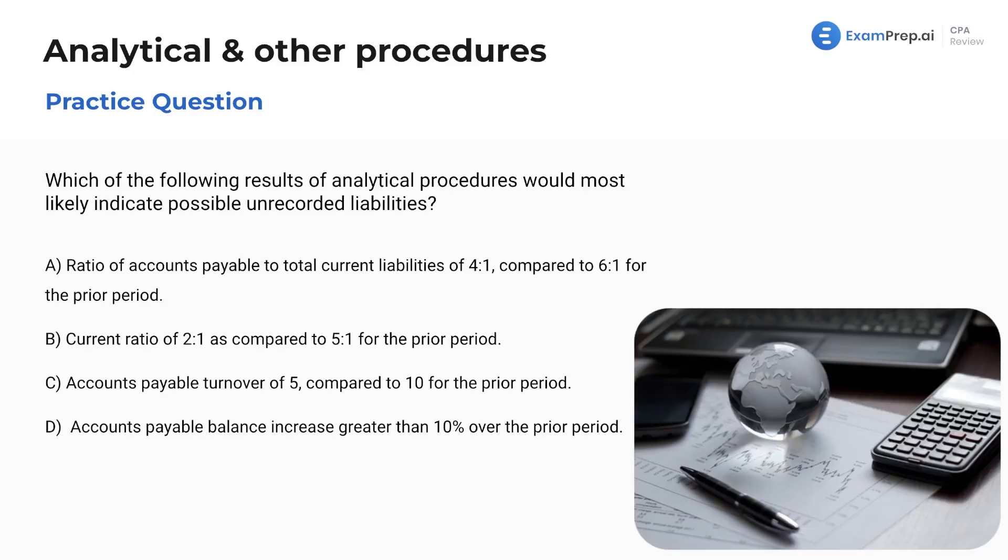Which of the following results of analytical procedures would most likely indicate possible unrecorded liabilities? I like this. We're applying our knowledge and saying, okay, let's be a little analytical here. Let's think about this for a second. Okay. Which would most likely indicate possible unrecorded liabilities? So we're thinking, what is the relationship between liabilities and another account? We're thinking something like that. Yeah. Yeah. I like this one. I'm just, I'm reveling in it. I mean, I know I'm the one who picked these questions out to go through, but yeah, I picked good questions. All right. Let's work through it.